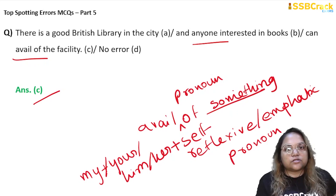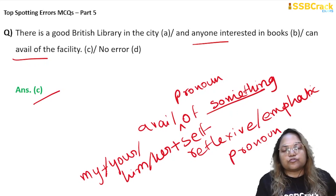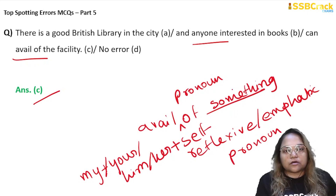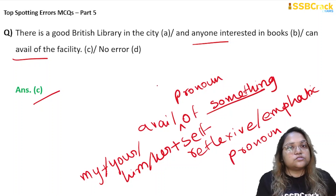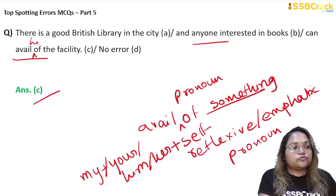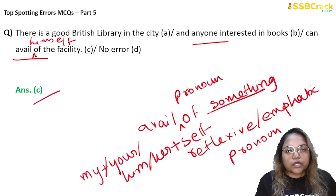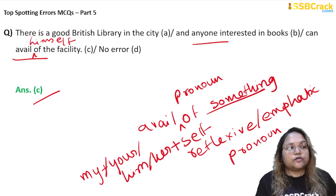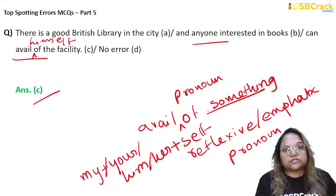Here, 'anyone' is the subject. In English, if the subject's gender is not known, we always use masculine gender — that is the basic rule. So here we are going to use 'him,' meaning we say 'avail himself of the facility.' You have to use this reflexive format whenever you use the word 'avail' in a sentence. So C is your answer.